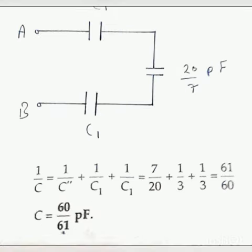Now you will connect 20/7 pF instead of C2 as shown in figure. Now these 3 capacitors are connected in series, so we will calculate it in series combination: 1/C equals 1/C1 plus 1/C2 plus 1/C3. This value will get 1/C equals 61/60, so C equals 60/61 pF.